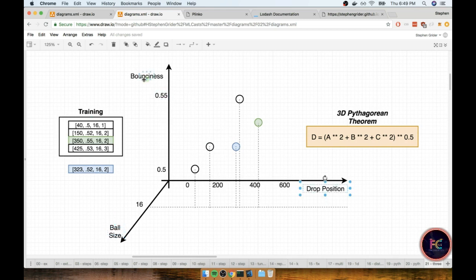where we've got our drop position, our bounciness, and our ball size. In this case, our ball size was the same for all these different records at 16, and I just did that to make this chart a little bit easier to put together.